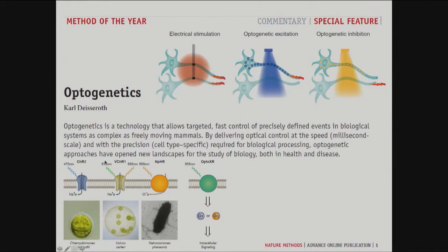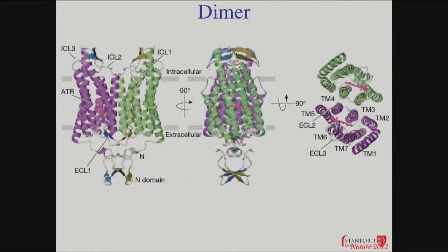We bring light-activated ion channels and pumps from microbial organisms like algae that make light-activated regulators of ion flow. We put those under genetic control and introduce them into targeted neurons. Then we can bathe the whole tissue or the whole nerve in light, but only the cells we've made light sensitive will respond. You can turn on or turn off using optogenetic exciters or inhibitors, which affords the possibility for selective control.